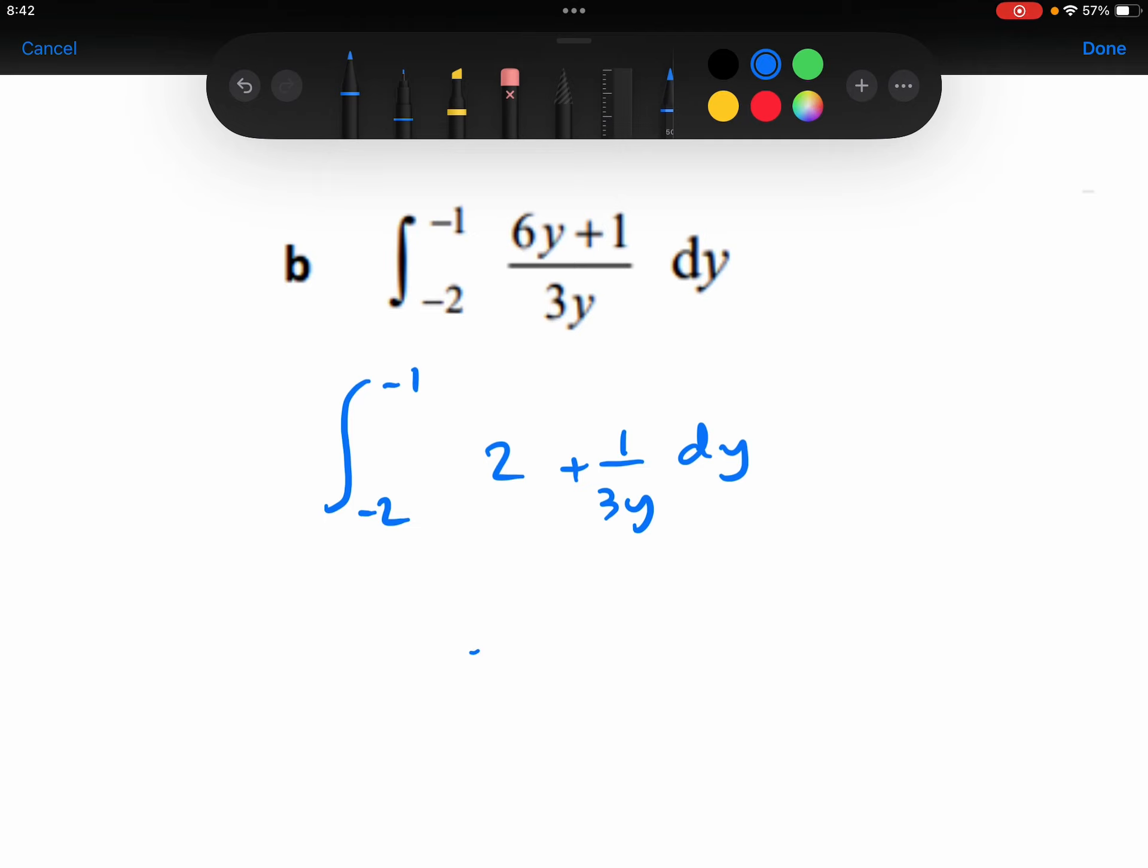The 2 will integrate to be 2y. The 1 over 3y is the same thing. I could think of this as being 1 third times 1 over y. I know the 1 over y will integrate to be ln y, and I've got 1 third ln y.